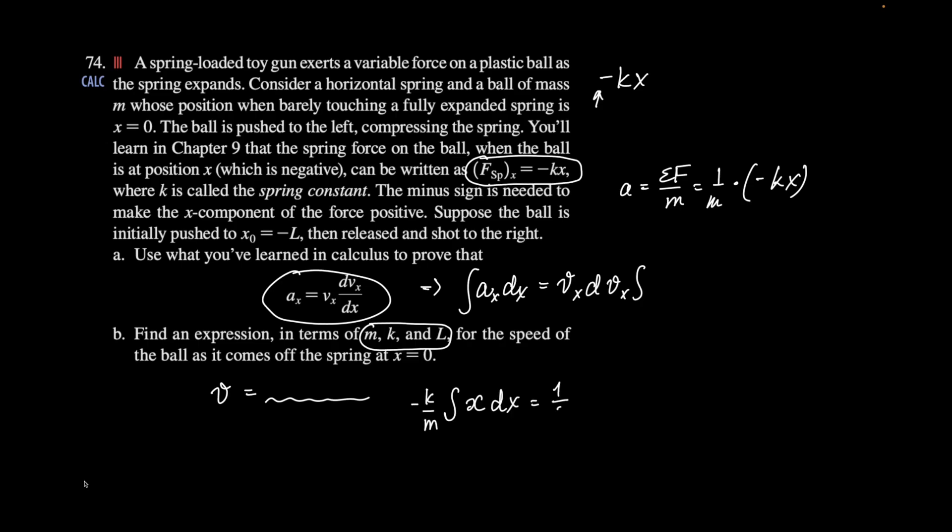this obviously is 1 half v squared, and we're going from 0 to v, and v is what we're after. x is from negative l to 0. So when I integrate, that's going to be also 1 half. Then we have negative k over m,